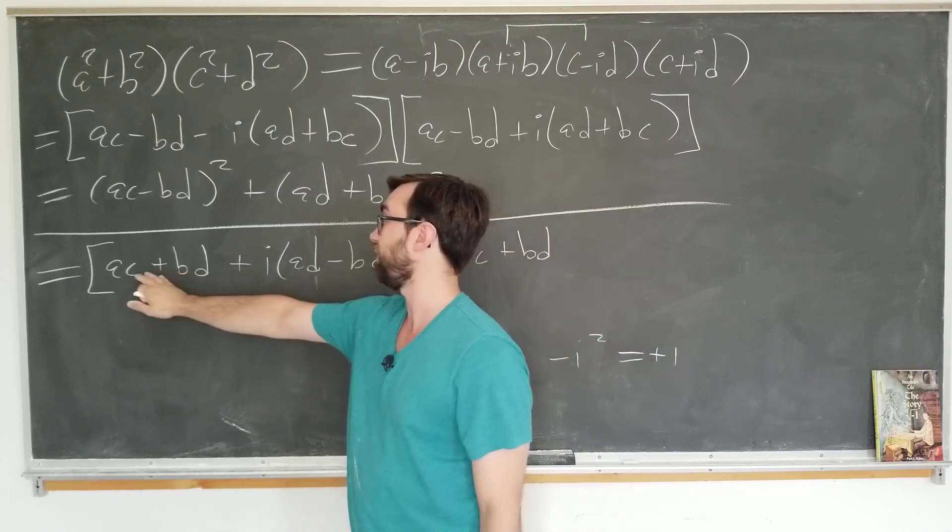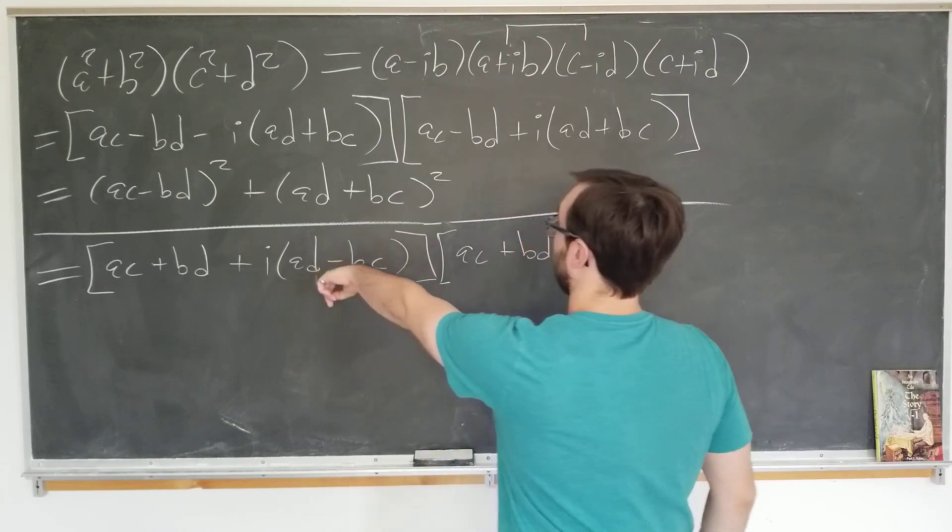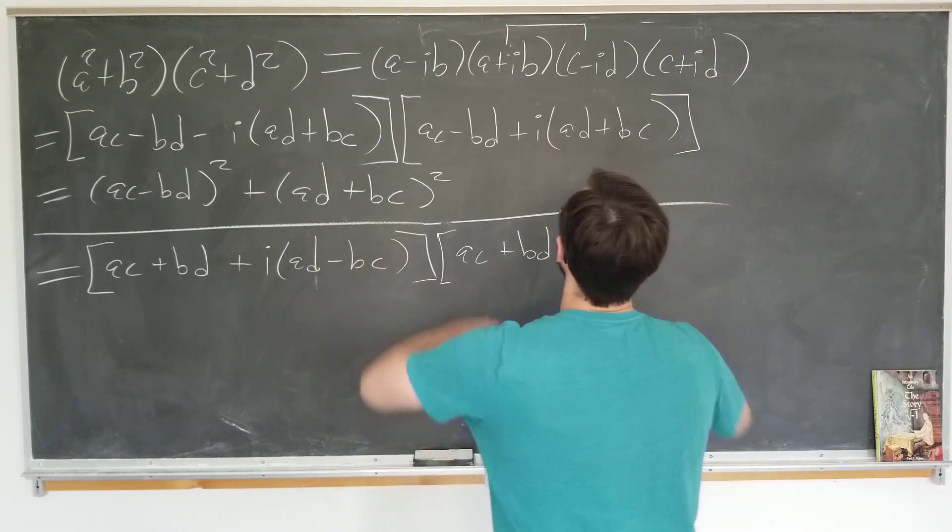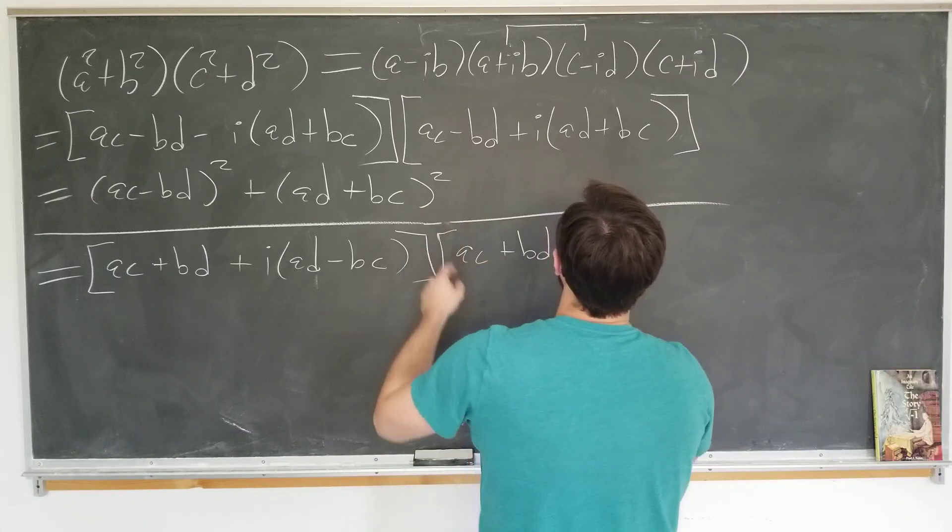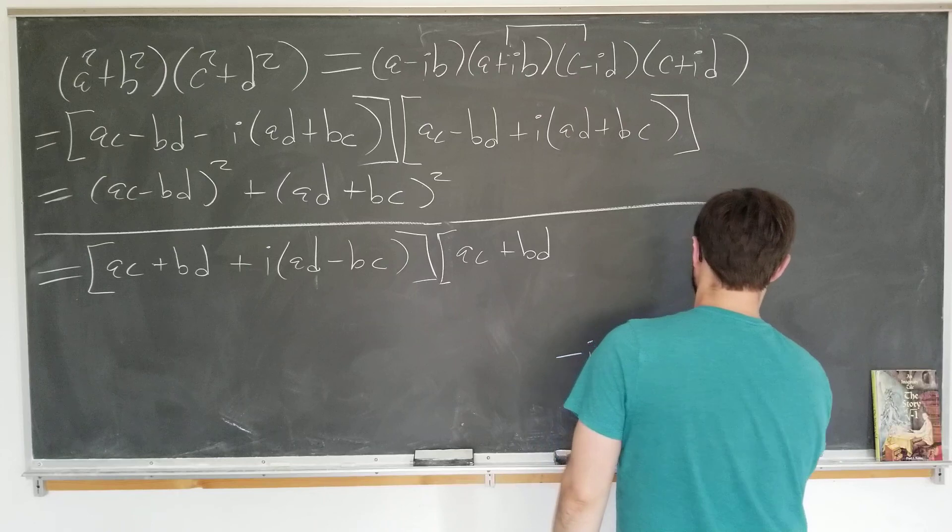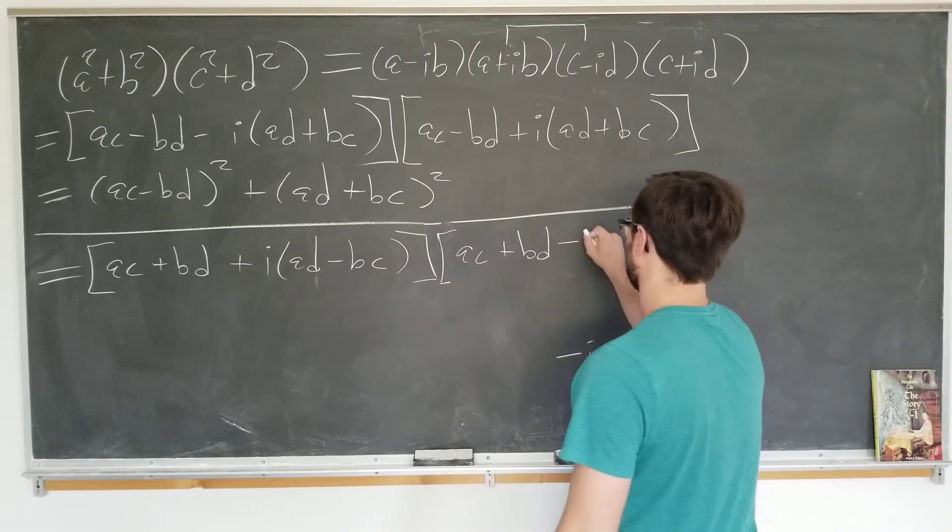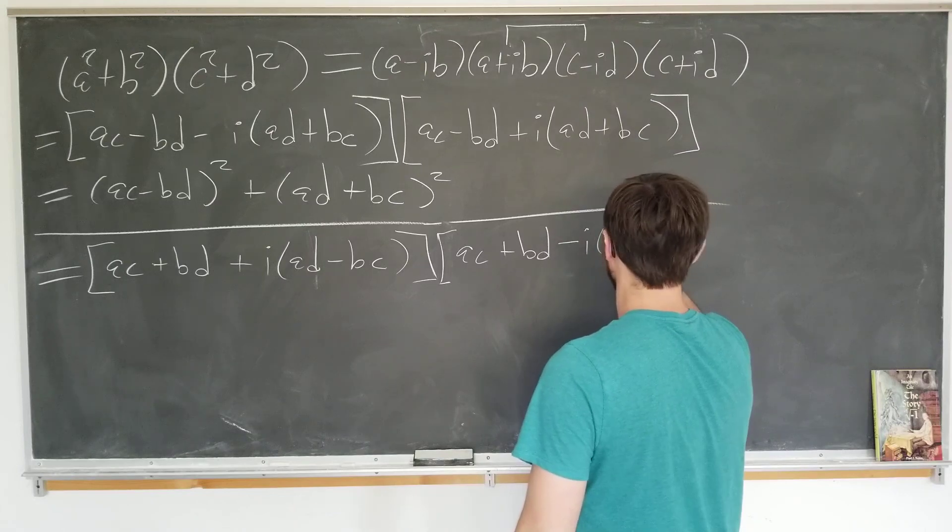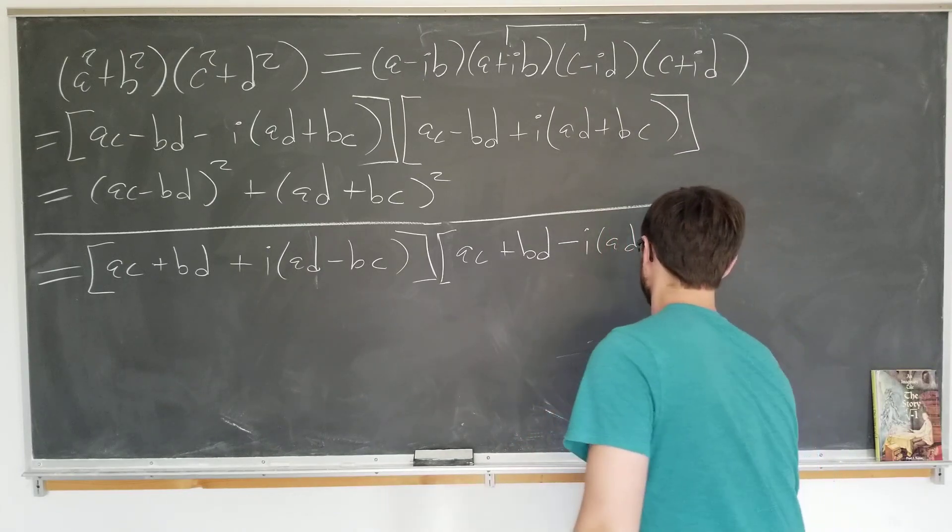And we would really hope that it's minus i times that here. So let's see if it is the imaginary term minus iad plus ibc, which is exactly what we want. So minus i ad minus bc.